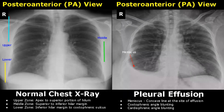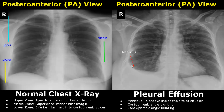Pleural effusion refers to accumulation of fluid in the pleural cavity due to various conditions. It leads to formation of a meniscus, which is a concave line at the site of effusion. You will see this concave shaped interface between the lung field and the pleural effusion. The right costophrenic and cardiophrenic angles are blunt.